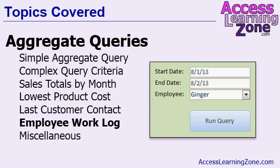Next, we'll build an employee work log where we can track employee time. Pick the employee, put in their start and end time for when they check in. Then using an aggregate query, we can generate a report showing all of their hours worked between two dates. If you want to get their hours worked for the week, just type in those dates, hit run query, and there's your report.